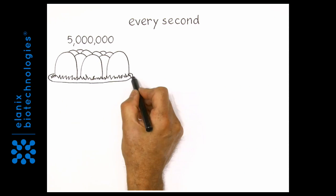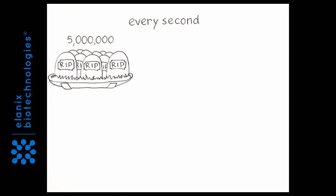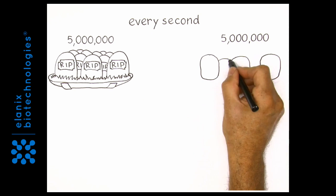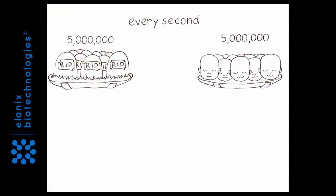Every second, some five million cells die in our body. Every second, the same number of new cells is born.